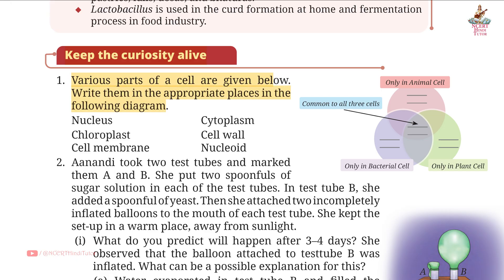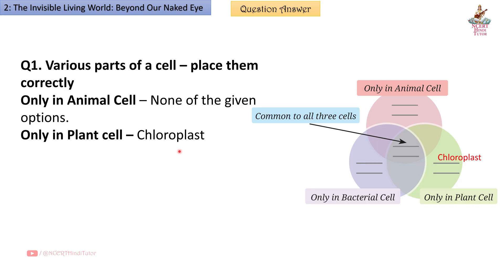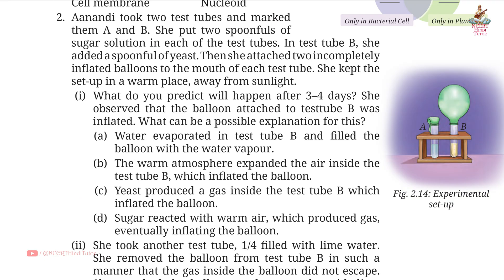Answer: Only in animal cell — none of the given options. Only in plant cell — chloroplast. Only in bacterial cell — nucleoid. Common to all three — cytoplasm, cell membrane, and cell wall.